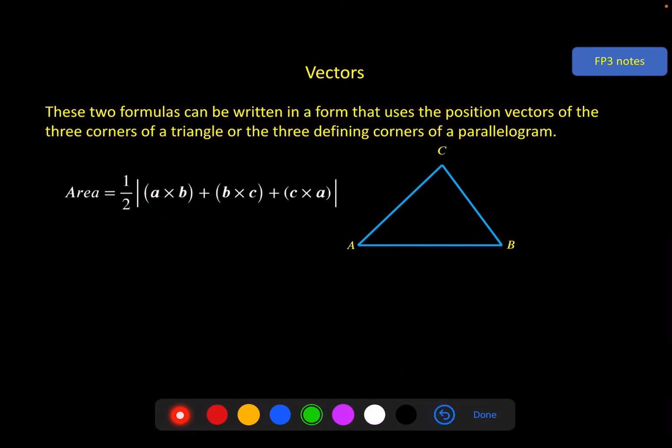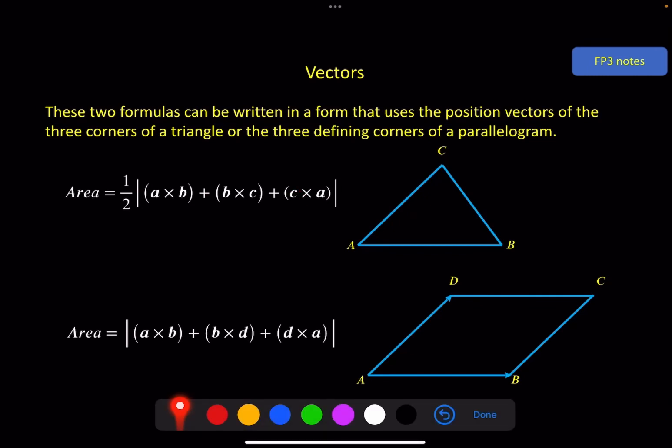This is another way of writing the area formula. And for a parallelogram, the only thing you need to be careful of here is your lettering. A, B, C here is fine, but A, B, we need D here, not C over here. So that C becomes a D just because of the lettering on a parallelogram. And of course, because it's a parallelogram, we don't have the half in front because we're using two congruent triangles.